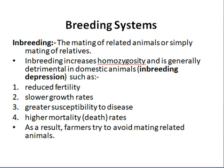Inbreeding results in what we call inbreeding depression — reduced fertility, slower growth rates, higher chances of disease, and higher mortality. Therefore, farmers try to avoid mating closely related animals. We cannot completely avoid inbreeding, but we can always minimize its effects.